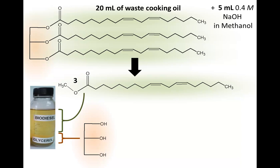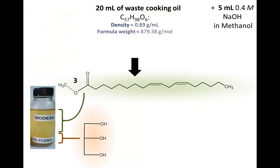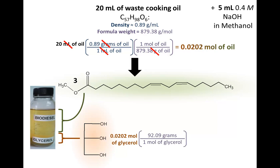Giving the composition of the vegetable oil makes it possible to determine the density and formula weight for the triglyceride in question. Using the density, the starting volume of oil can be converted to grams. Using the formula weight, this can be converted to moles of oil. With the balanced equation, one mole of triglyceride generates one mole of glycerol and three moles of methyl linoleate. Similar conversions can be used to determine the mass and volume of these products.